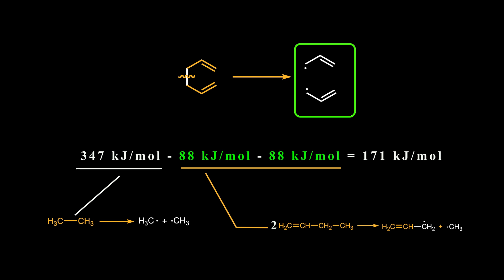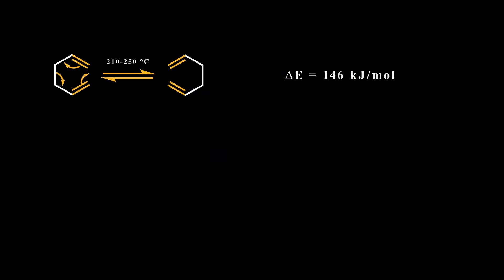However, when 1,5-hexadiene is heated above 200 degrees, it doesn't dissociate into radicals. Instead, it undergoes a Cope rearrangement. This is because the activation energy for the Cope rearrangement is 146 kJ per mole, which is 25 kJ per mole lower than the energy required for the homolytic cleavage of the central bond in the system.